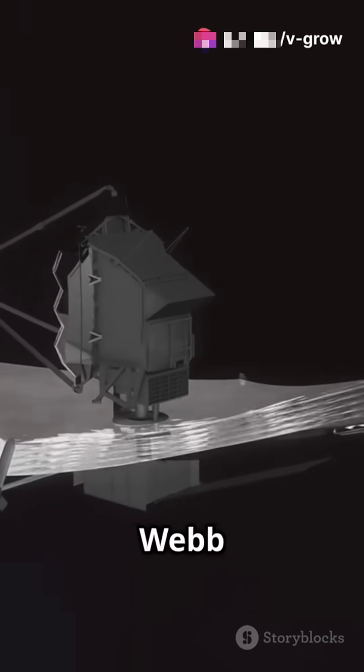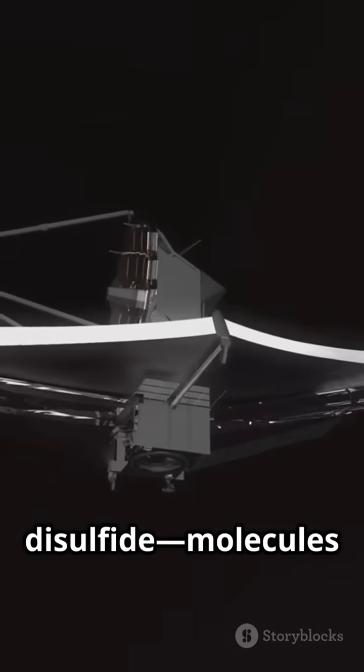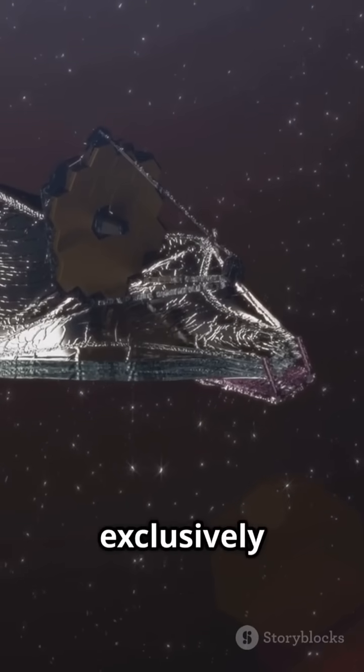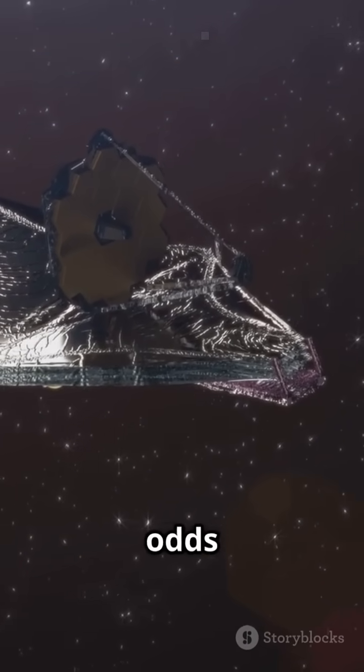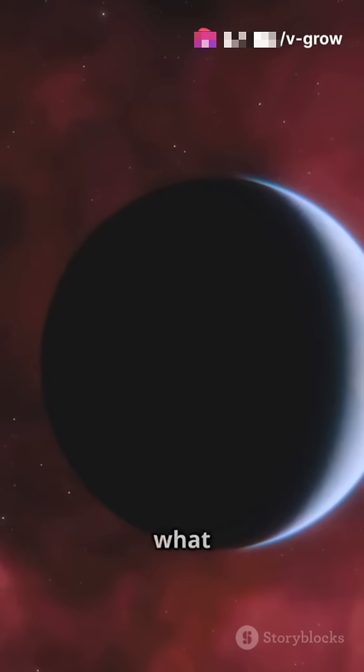Using the James Webb Space Telescope, astronomers spotted dimethyl sulfide and dimethyl disulfide, molecules that on Earth are almost exclusively produced by biology. The odds of a false positive? Under 0.3%. So what does this mean?